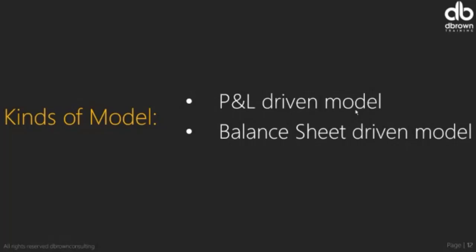Most businesses are profit-and-loss driven, meaning the line items that drive the whole business operation can be found in the P&L. For a manufacturing company, cost of sales is where you find opening stock, raw material purchases, and inventory units sold. The more units they sell, the more revenue they generate. Revenue and cost of sales are what really drive the whole business — we call these top-line items.